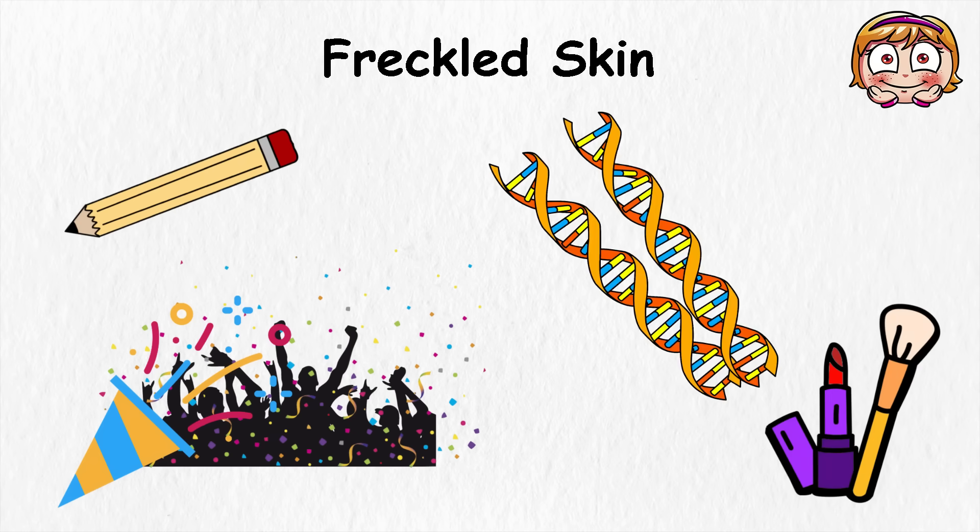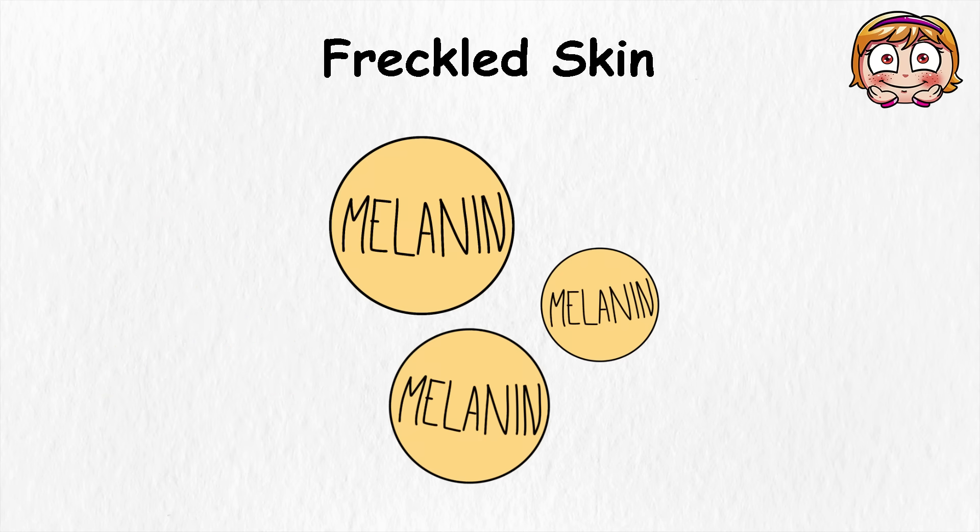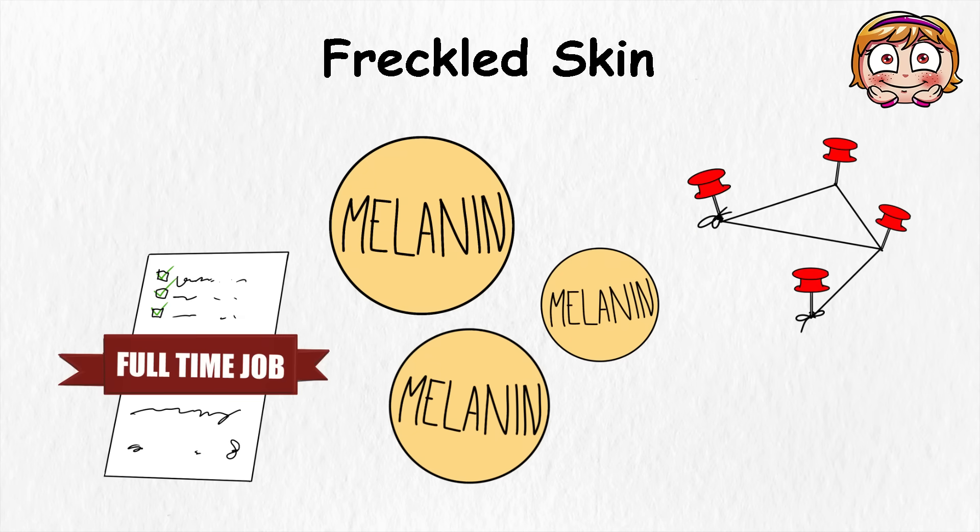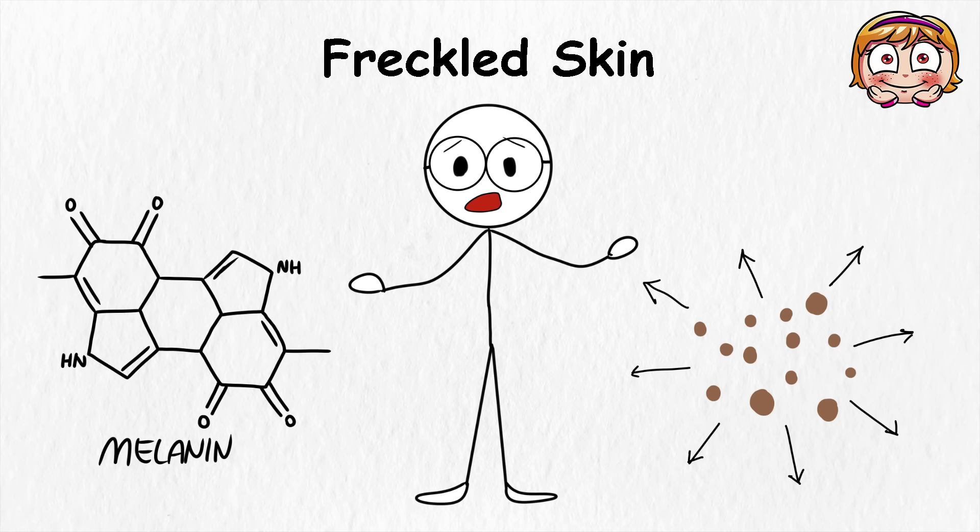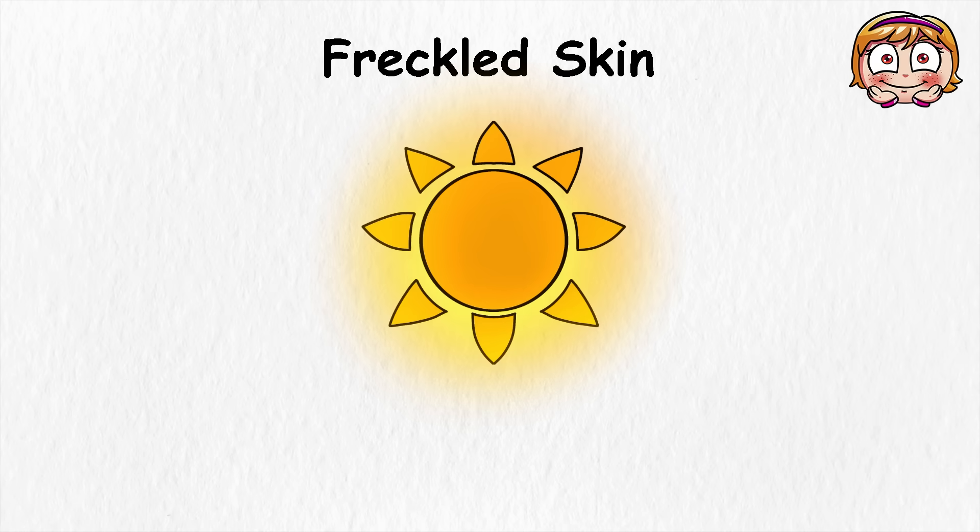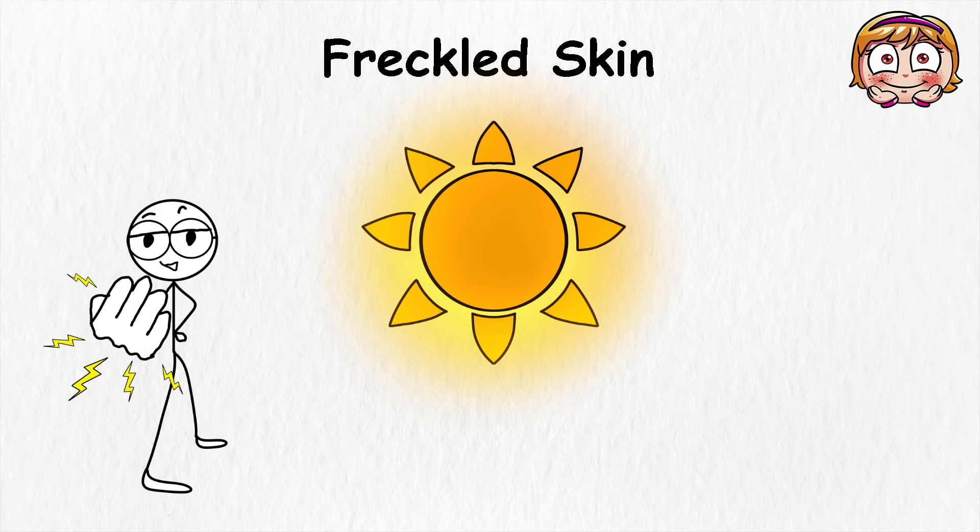What never changed, though, is the biology. Freckles are just melanin doing its job in a different pattern. Freckles just show up because your skin makes these extra pigments in small spots instead of just spreading them out, and that's why they get darker in the sun. This would also mean that your skin is more sensitive, so you have to be extra careful about sunburn.